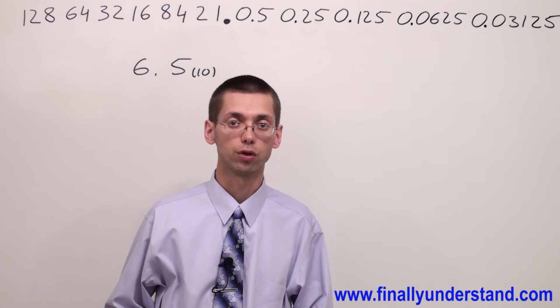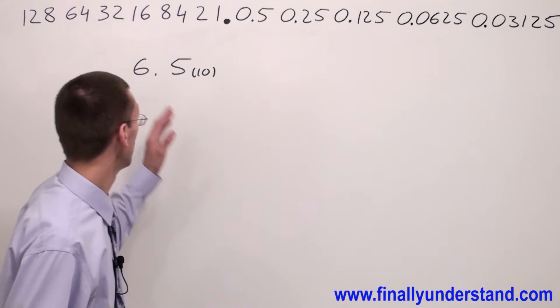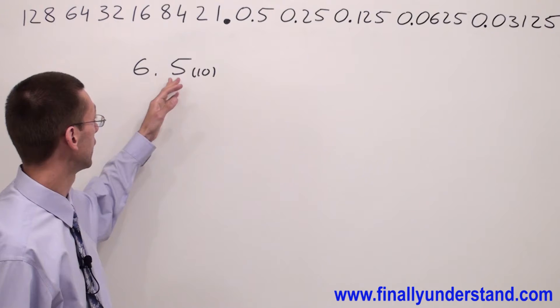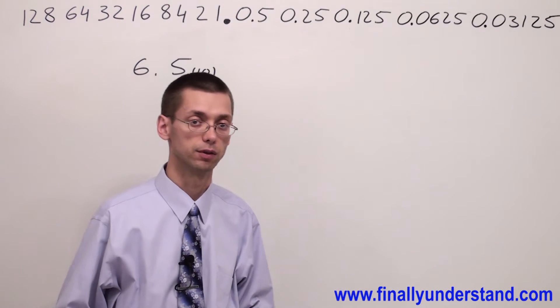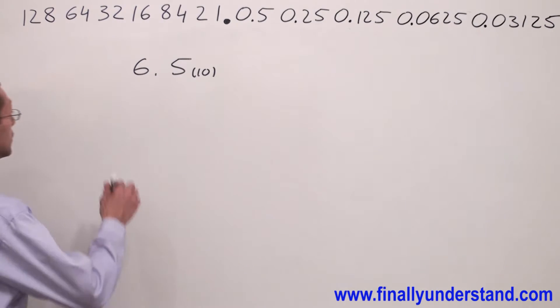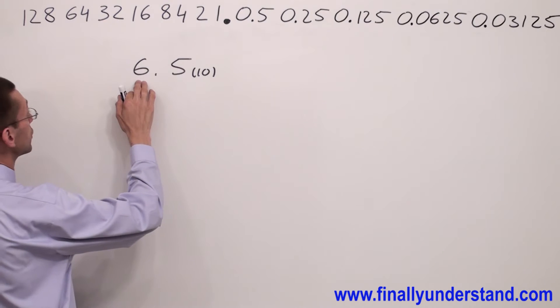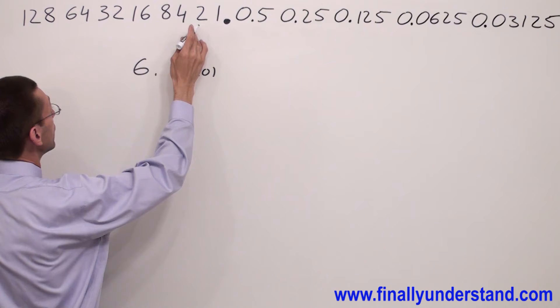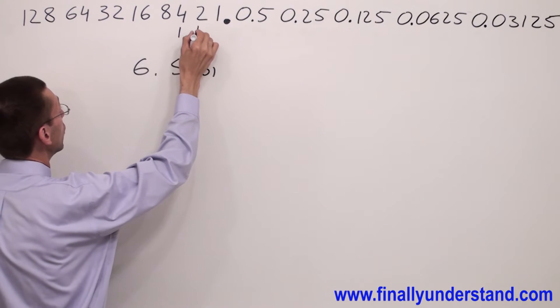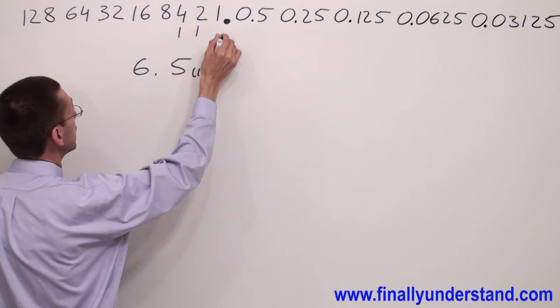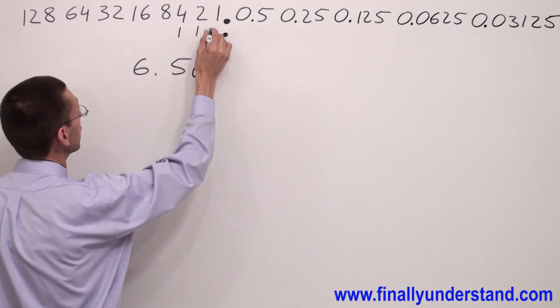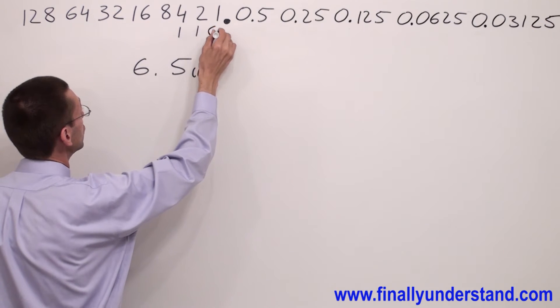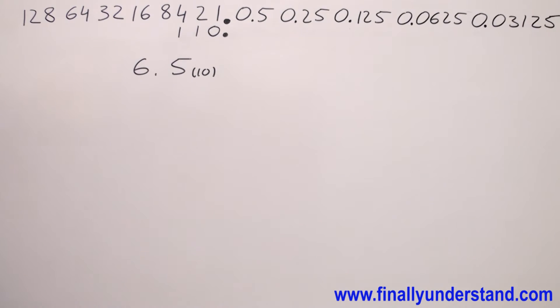This time we're supposed to convert 6.5 to binary. We're going to convert first the whole part of the number and after that the fractional part. 6 — you can build from 4 and 2. That's why I'm going to write 1, 1, and because my binary point is over here and I have an empty spot, I'm going to fill up this space by 0.